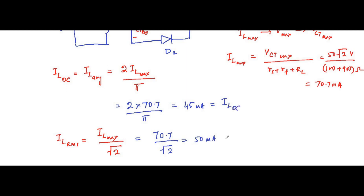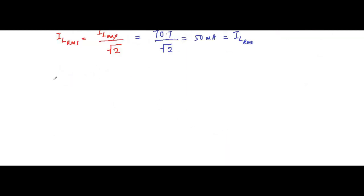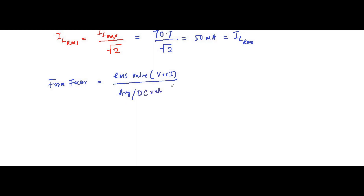So the DC value of load current is 45 mA and the RMS value is 50 mA. Next is form factor. The form factor formula is the RMS value of voltage or current divided by the average or DC value. Here we have current values, so it will be I_L_RMS divided by I_L_DC, which equals 50 milliampere divided by 45 milliampere, coming out to approximately 1.11.